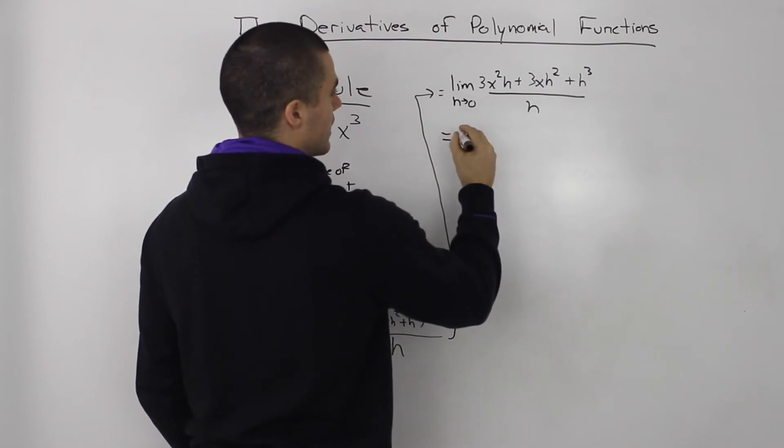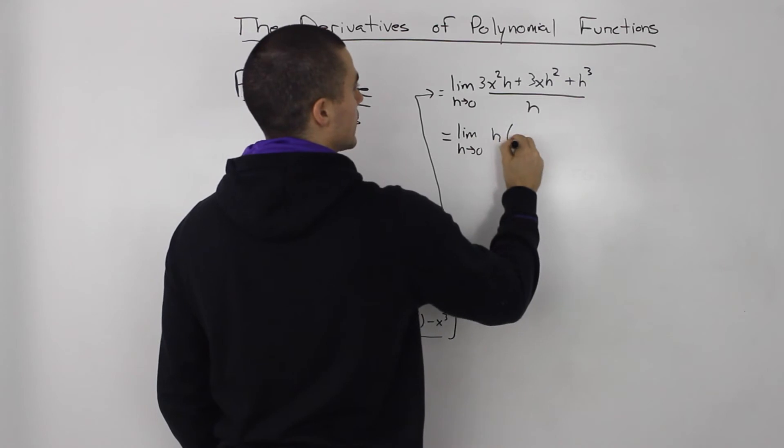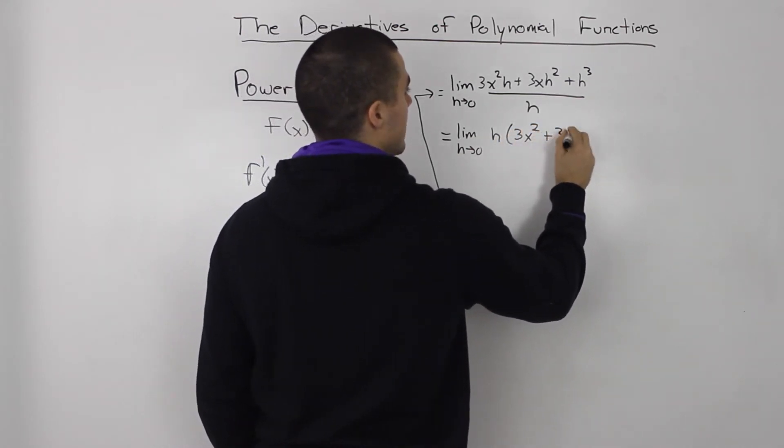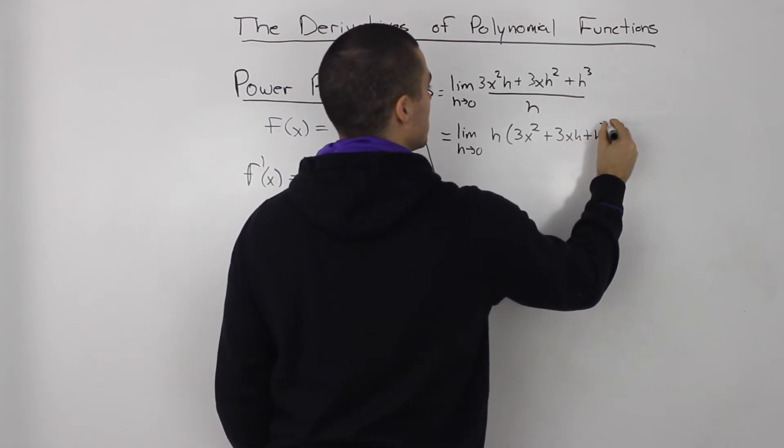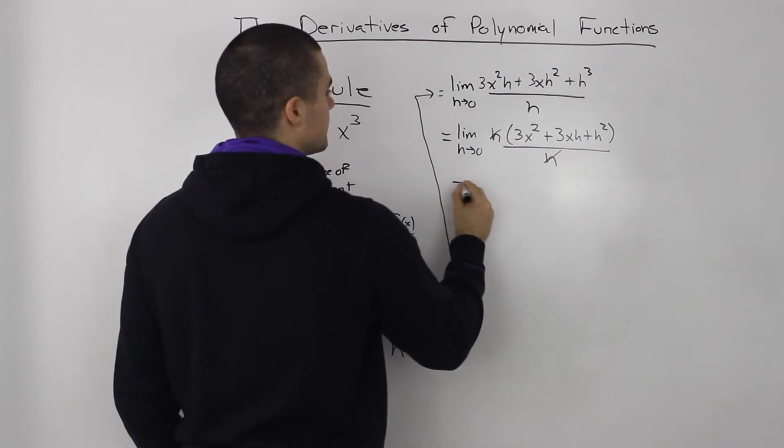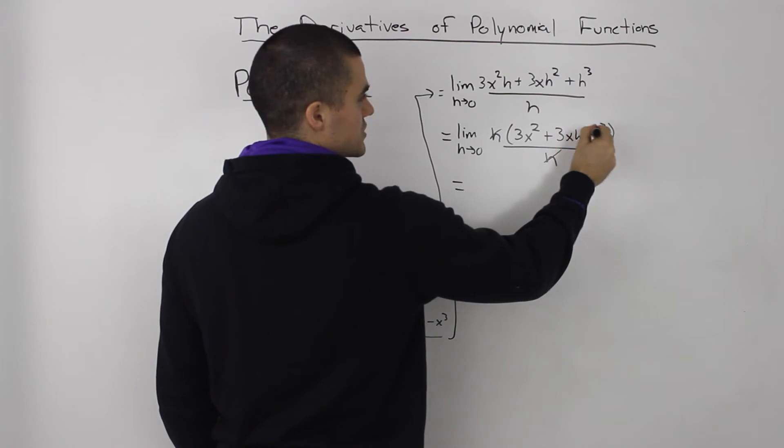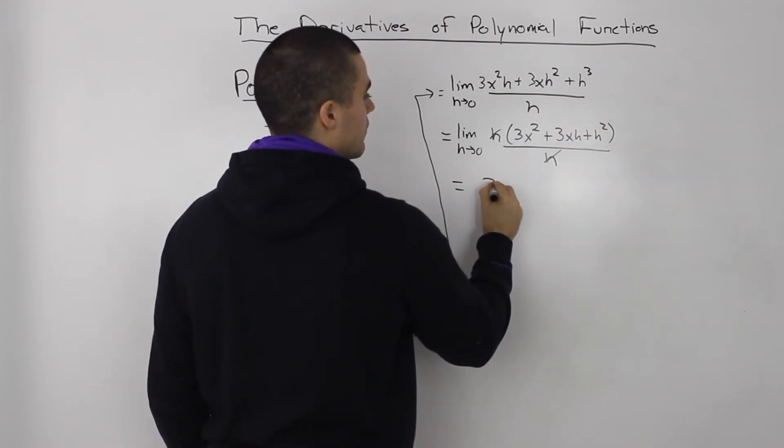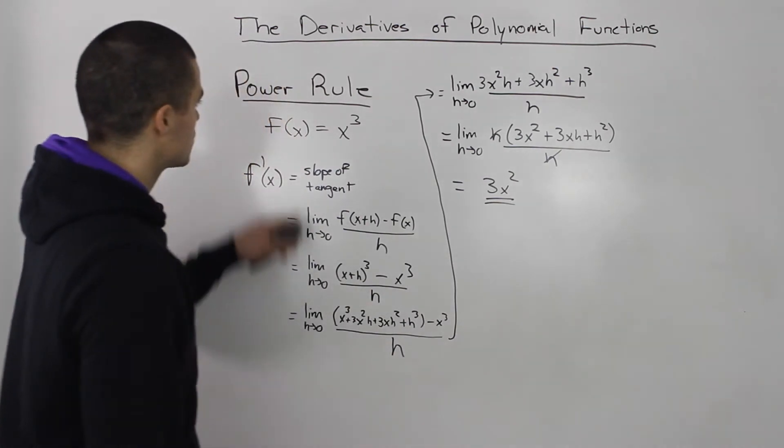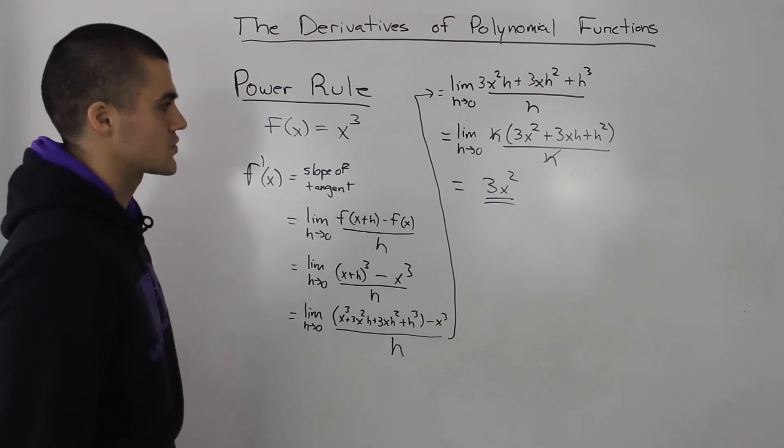Let's factor out an h from the numerator. So we'll get h times 3x squared plus 3xh plus h squared all over h. The h's cancel out, and then when we plug in zero for h, this term goes to zero, this goes to zero, and we're just left with 3x squared. So the derivative of x cubed is 3x squared.